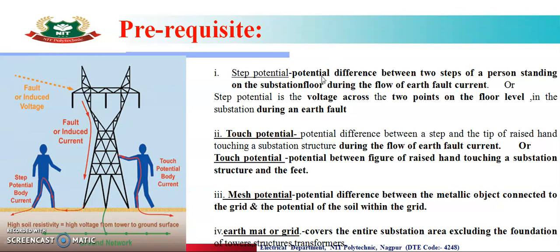तो हमने define किया था: step potential is the potential difference between the two steps of the person standing on the substation floor during the flow of earth fault current. जब earth fault current रहेगा, तब substation के floor पे जो इनसान खड़ा है, उसके दो step के बीच का potential difference को बोलेंगे step potential।